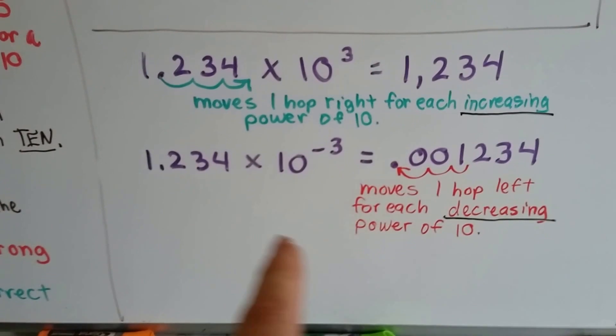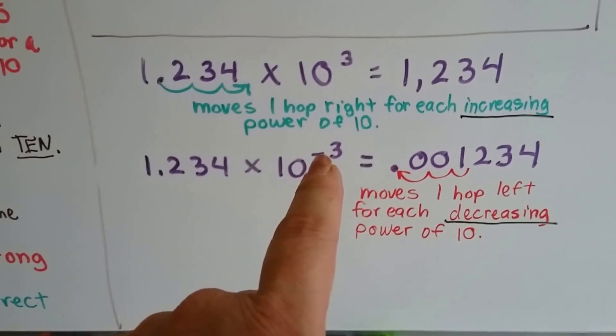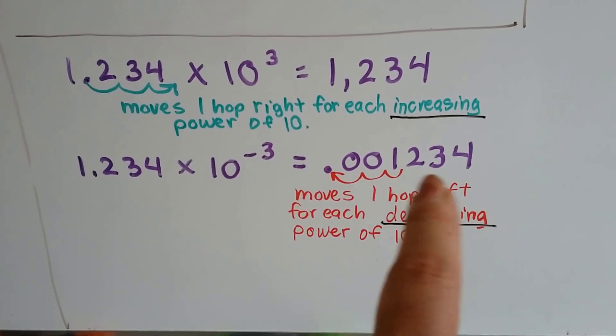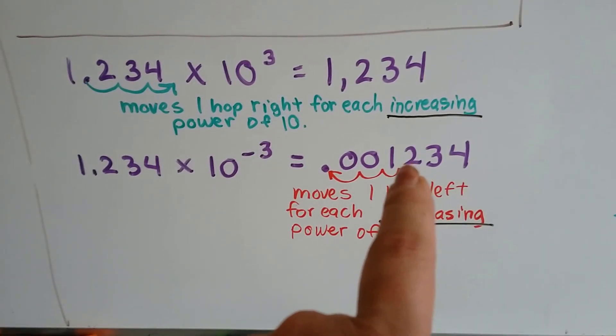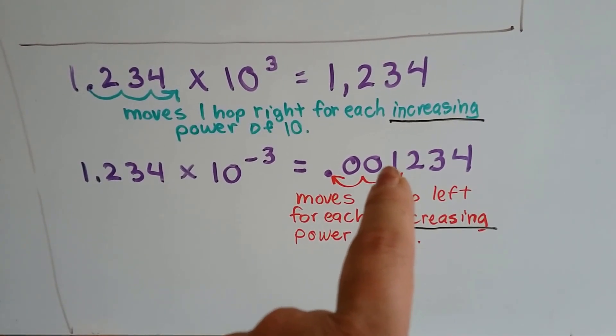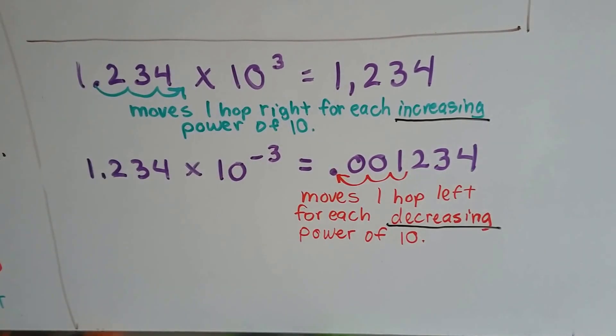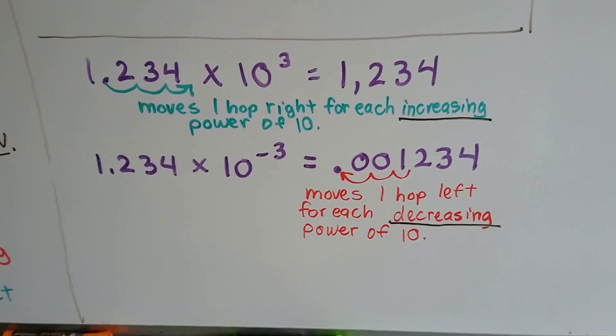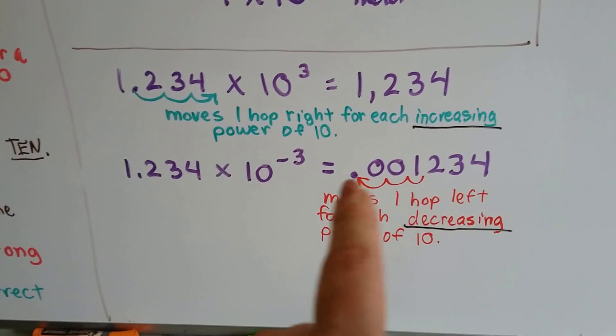Same thing if we're going negative. 1.234 times 10 to the negative third power would be written as a decimal like this, and it would be 1,234 millionths. So the decimal point was in between the 1 and the 2. If we multiply it by 10 to the negative 1, it moves it here. 10 to the negative 2 moves it here, and multiply it by 10 to the negative 3, and it puts it here. For every decimal move, one hop left is decreasing the power of 10 one time.